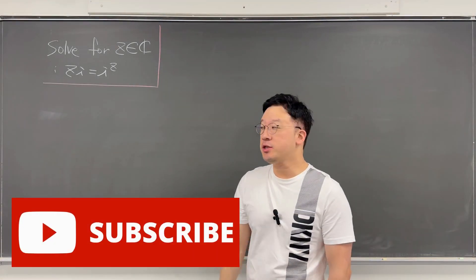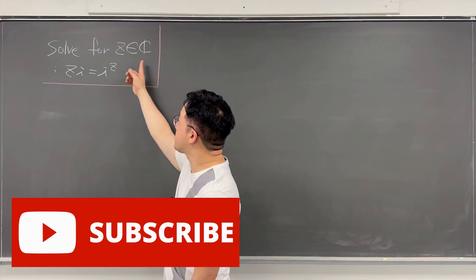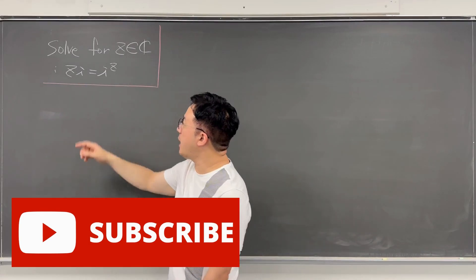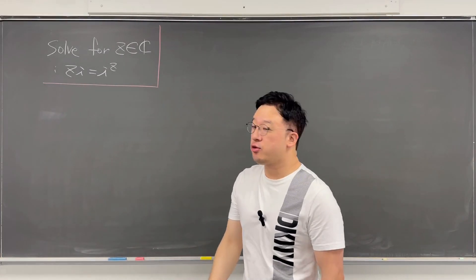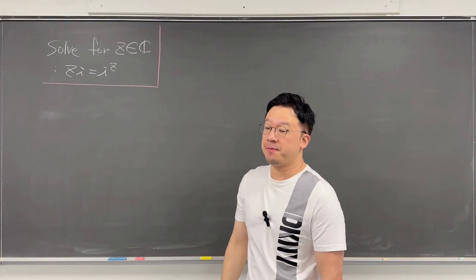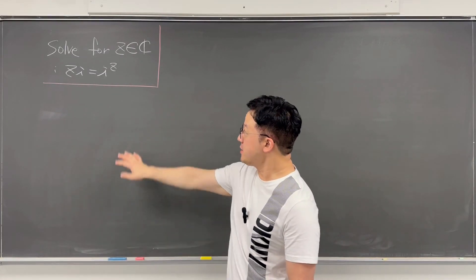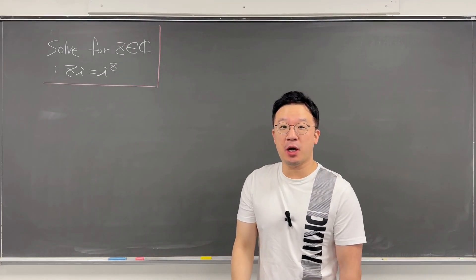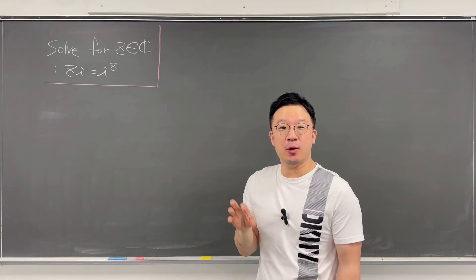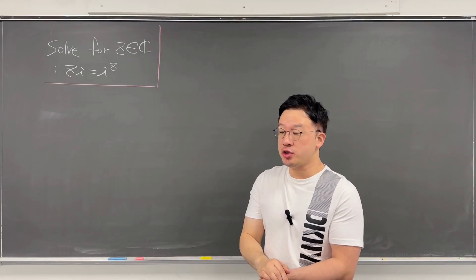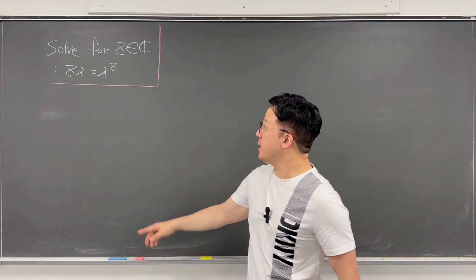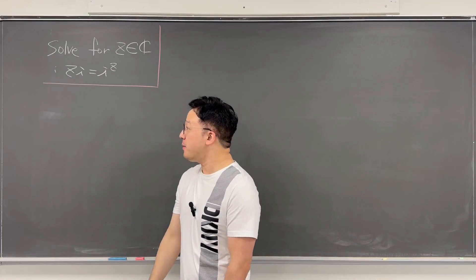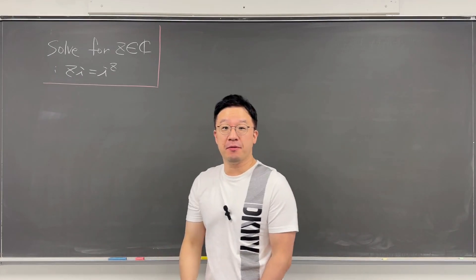Here's the question. The question is: solve for z, that is a complex number. We have z times i is equal to i to the power of z. The question is asking for the complex solution, so we will not be getting only the real solutions, but the complex solution in general. I'll be using the Lambert W function.